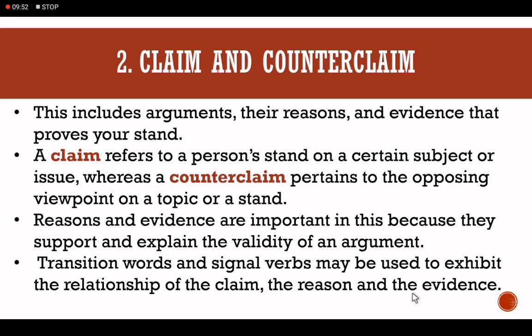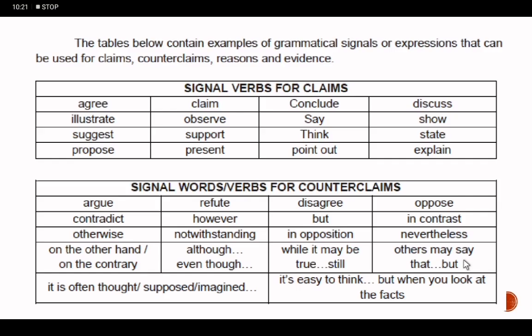Let's now proceed to the second pattern: claim and counterclaim. A claim refers to a person's stand on a certain subject or issue. A counterclaim pertains to the opposing viewpoint on a topic or stand. Signal verbs for claims include: agree, claim, conclude, discuss, illustrate, observe, say, and so on. Signal words or verbs for counterclaims include: argue, refute, disagree, oppose, contradict, however, and so on. Familiarize yourselves with these signal words for claims and counterclaims.